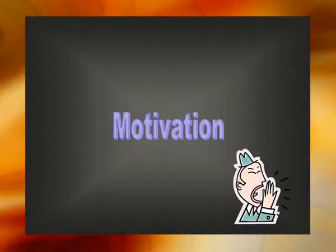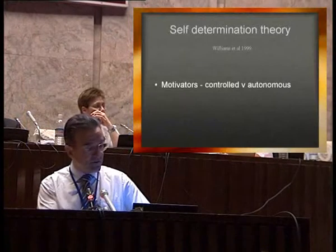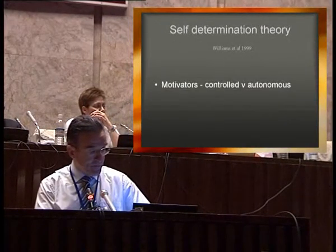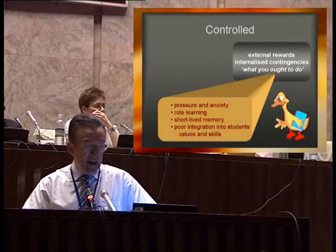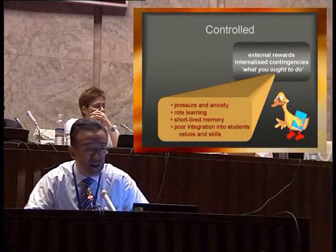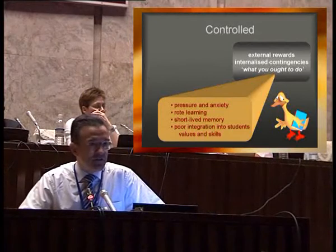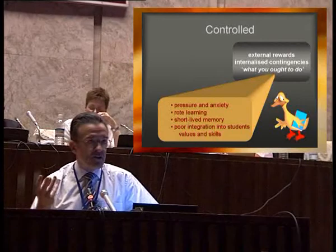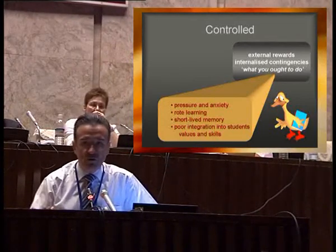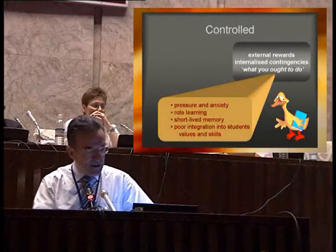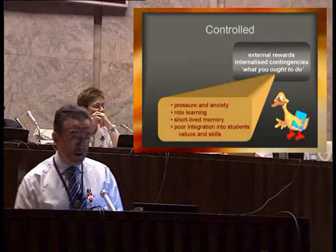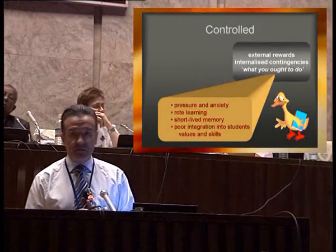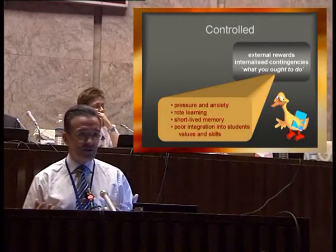If we look at the group of theories related to motivation, Williams came up with something called the self-determination theory. Motivators are divided into two sorts: controlled motivators and autonomous motivators. Controlled motivators have all to do with external rewards or internalized contingencies — things that you ought to do. Does this sound terribly like the medical curriculum? What drives the students are the external rewards of passing their exams, or the peer pressure and teacher pressure that this is the kind of student who ought to be working hard. The trouble with that sort of motivation is that it leads to pressure and anxiety, rote learning, short-term memory of the material, and very poor integration of the material into the student's values and skills.